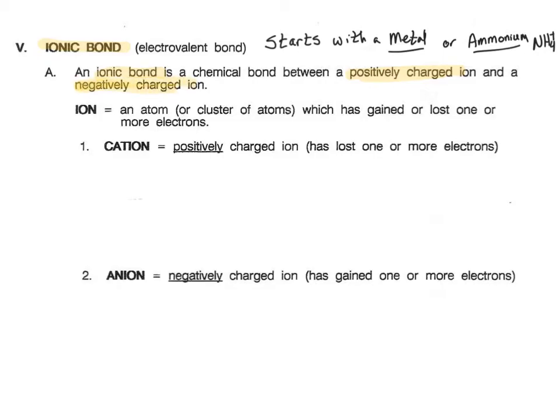An ion is anything with a charge on it where it's gaining or losing electrons. We have something called a cation. Cations are positively charged ions. That means they've lost one electron or more.